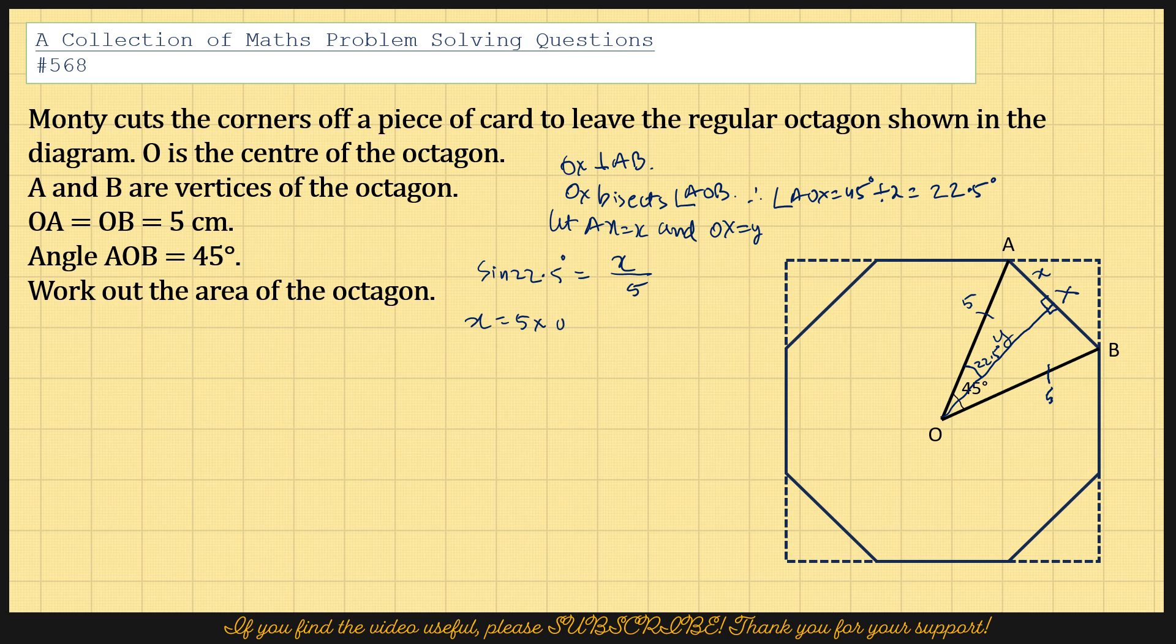So that's 5 times 0.383. So multiply by 5 and I'm going to get 1.913. So that would be centimeters.